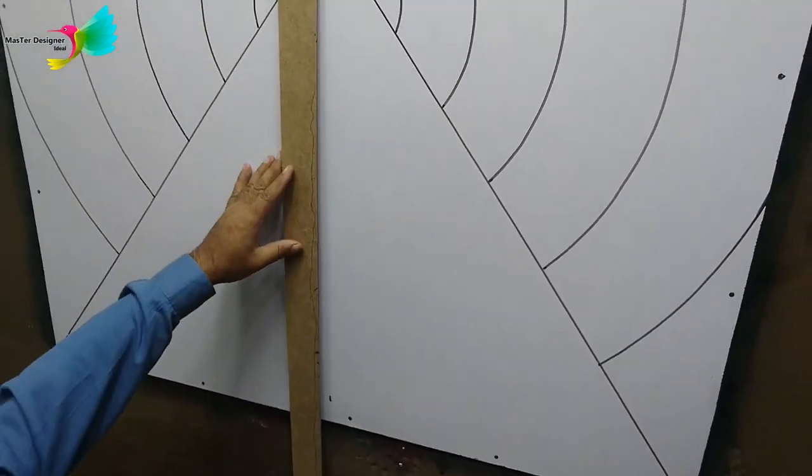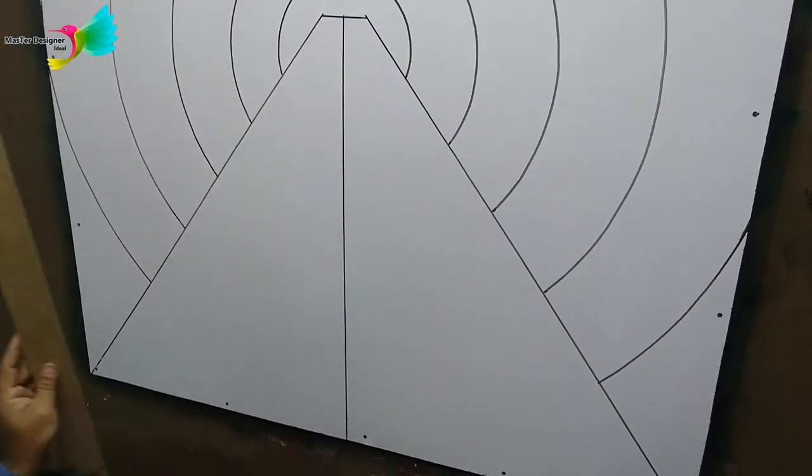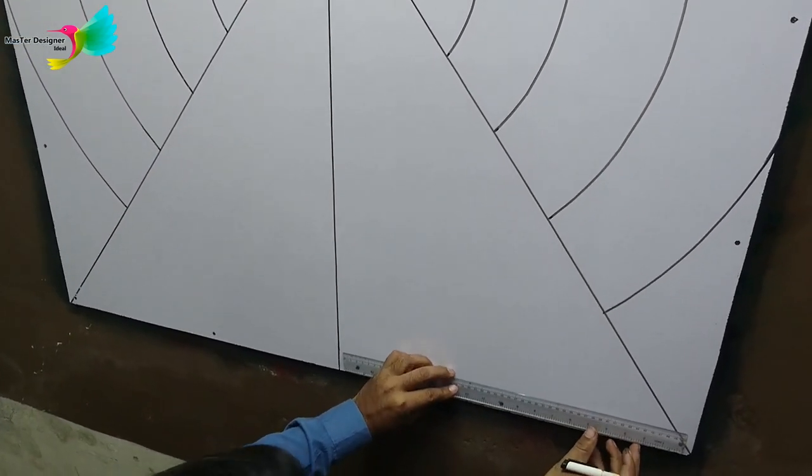Already looking like a tunnel. Now make a straight line right in the middle. Now make lines to give it a full parallax effect. We are making them five inches apart. It will sell the effect.